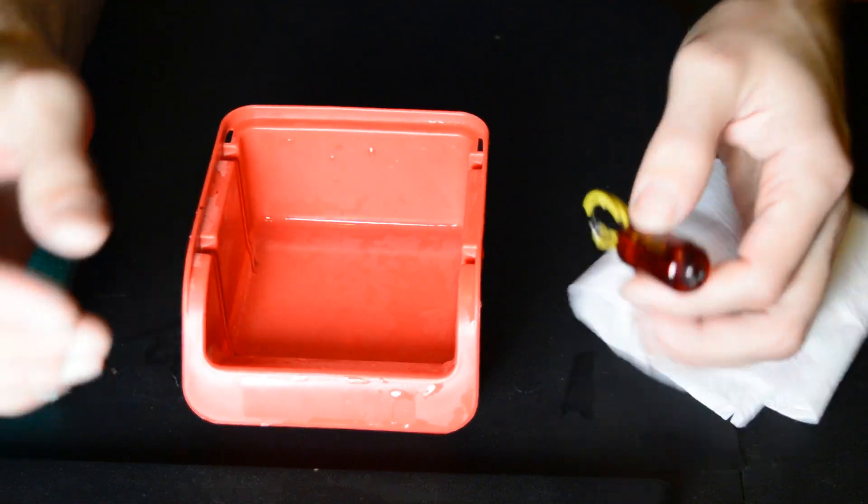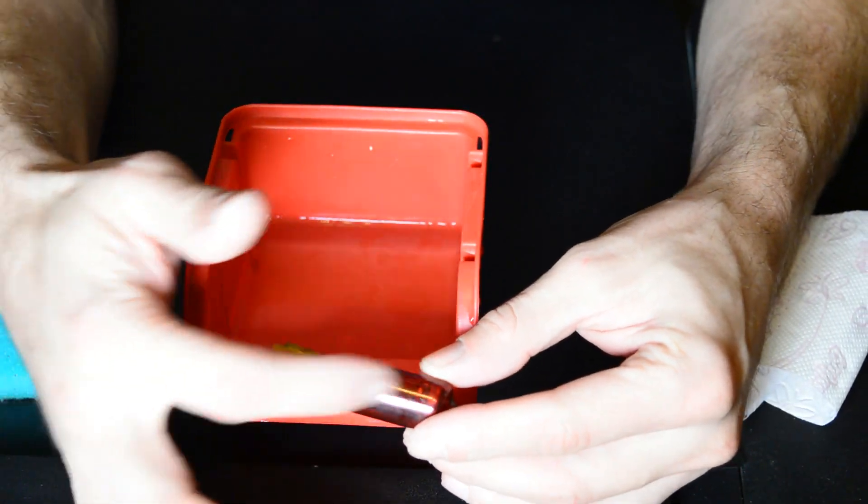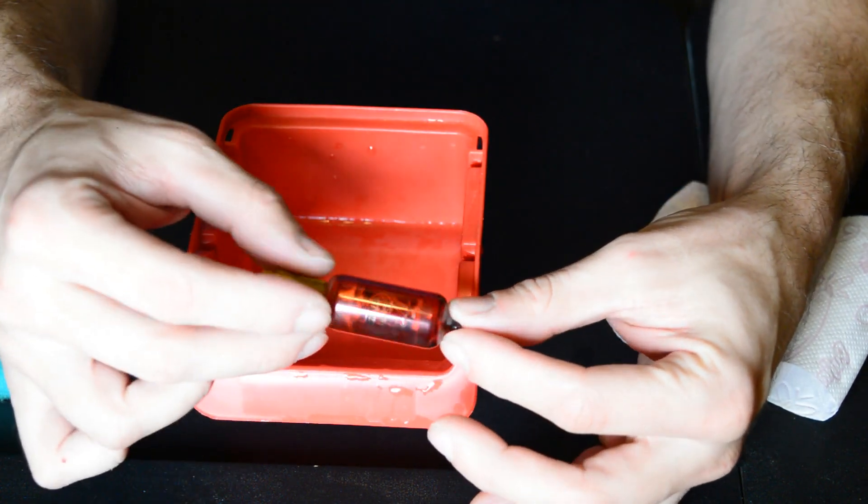So normally, this is what your Nixie tube, the recycled Nixie tube, will look like with paint scratches and chips all over the place.